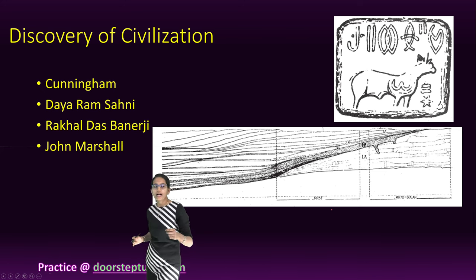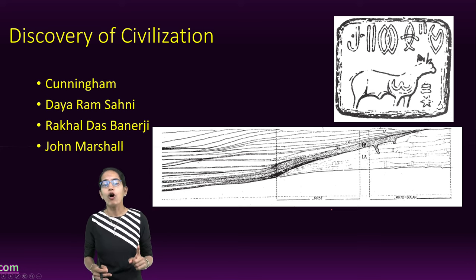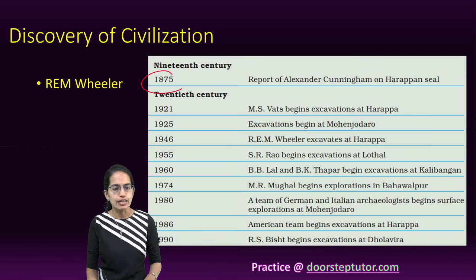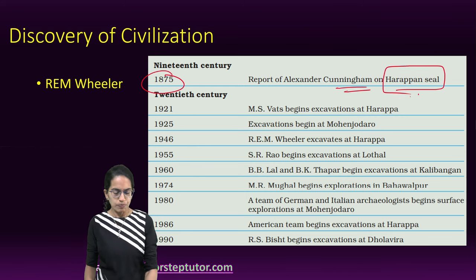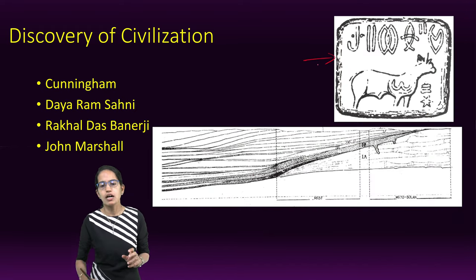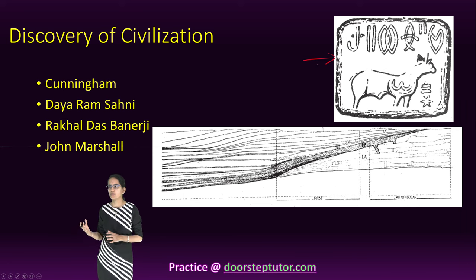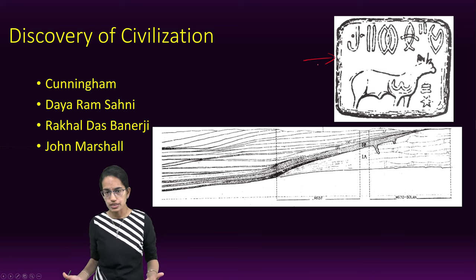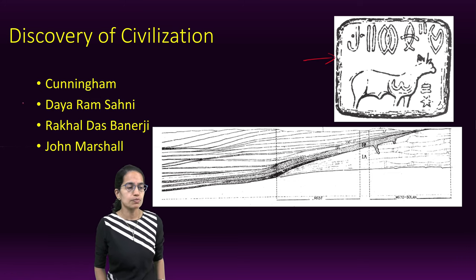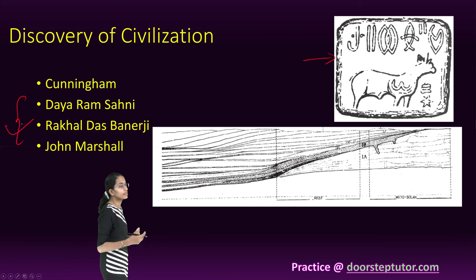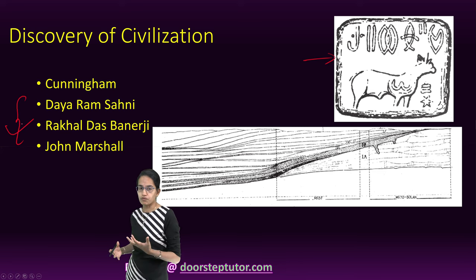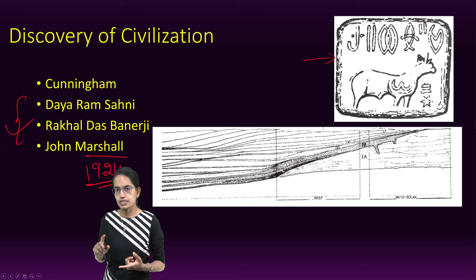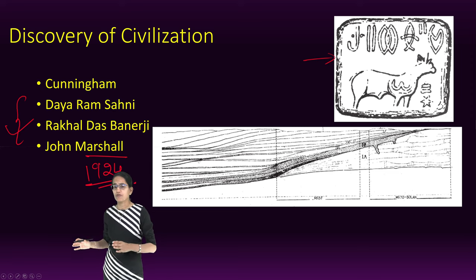Regarding how this civilization was discovered: Cunningham was the first Director General of the Archaeological Survey of India and began excavations in the mid-19th century. Around 1875 he encountered a Harappan seal but misidentified it as resembling Ganga civilization structures. Later, Daya Ram Sahani and Rakhal Das Benerji excavated Harappan remains. John Marshall, who became Director General of the Archaeological Survey of India, led the major discovery of the Indus Valley civilization in 1924.